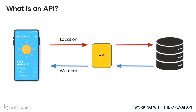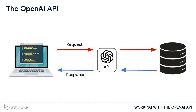Many applications interact using APIs. For example, a mobile weather app may send our location to an API and request the local forecast, which gets returned back to our phones. We can similarly write code to interact with the OpenAI API and request the use of one of their models.